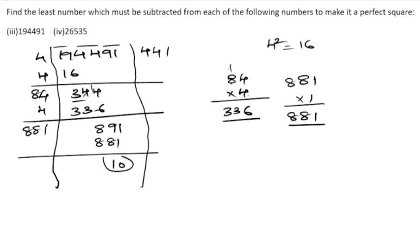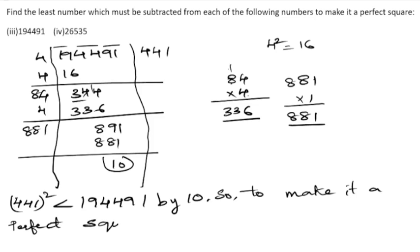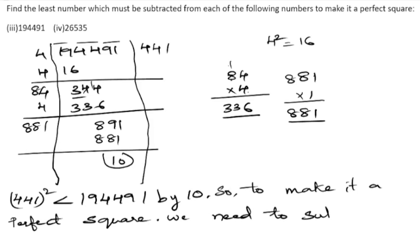The remainder is 10. So 441 squared is less than 194491 by 10. Therefore, to make it a perfect square, we need to subtract 10 from 194491.